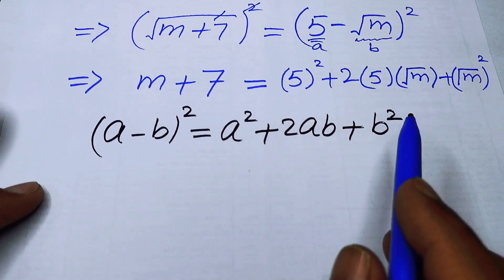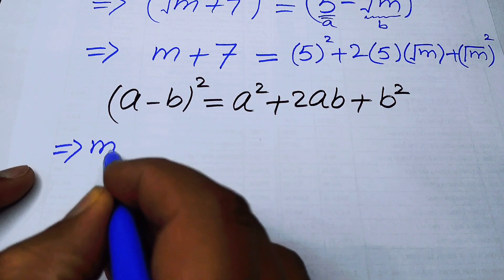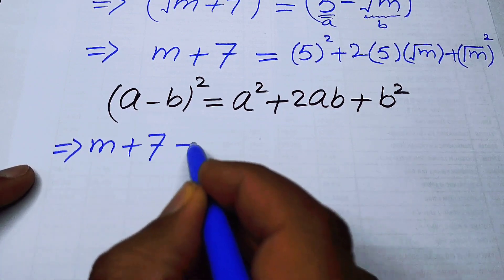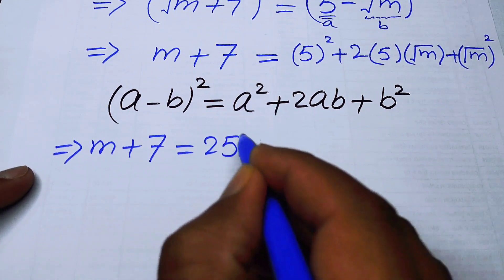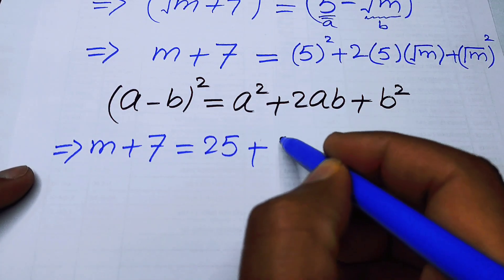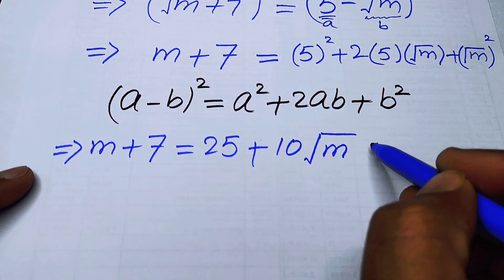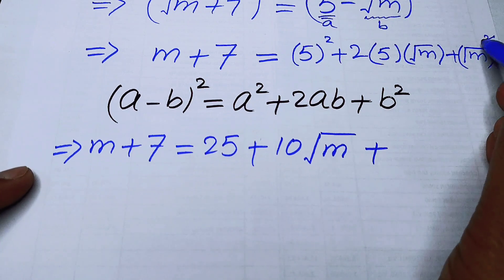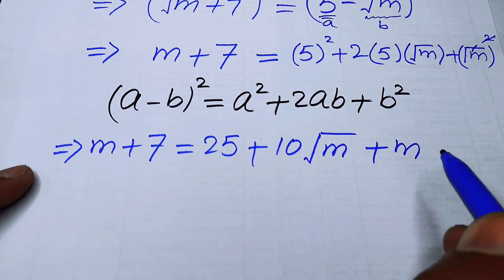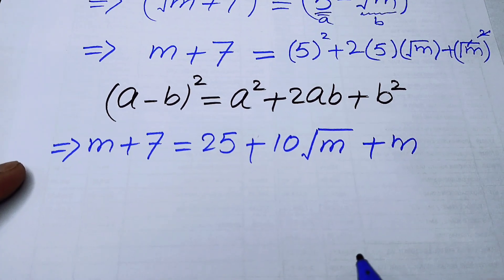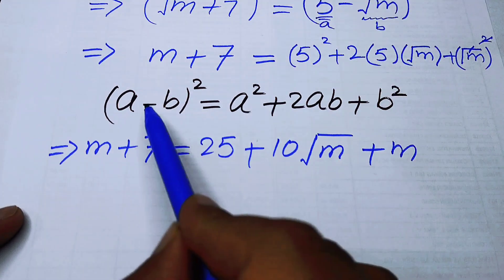Now we simplify both sides. On the left hand side we have m+7. On the right hand side, 5² = 25, and 2×5 = 10, so we get 25 - 10√m + m. Remember, in the (a - b)² formula, the middle term is negative.